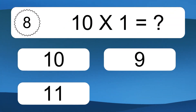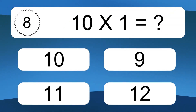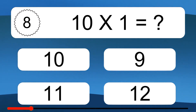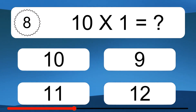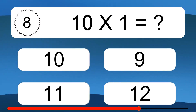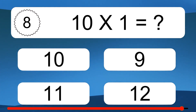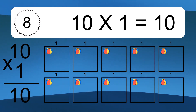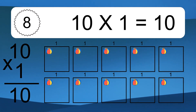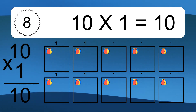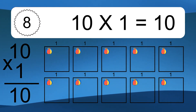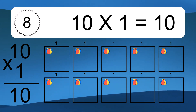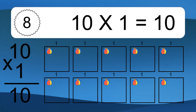10 times 1 equals what? 10 times 1 equals 10. We have 10 boxes, and each box has 1 colorful ball inside. If you count all the balls in all the boxes together, you will have 10 times 1 balls. This equals 10 balls.